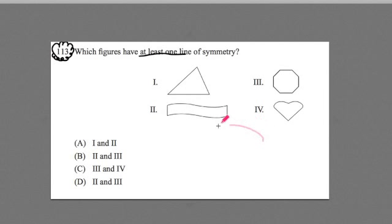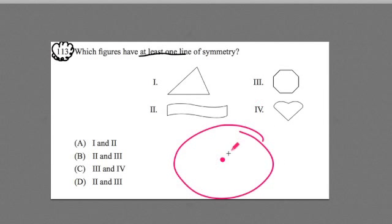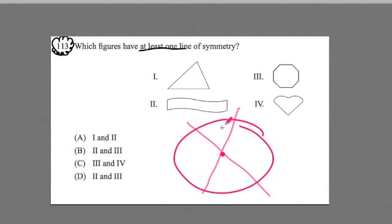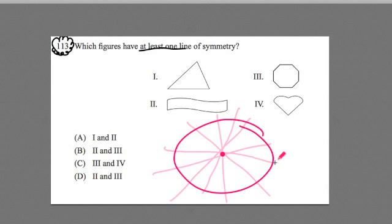The one that is really popular is a circle. How many different ways could you create a line of symmetry for a circle? You could do it here, and here, and here, and here — and the thing with a circle is that it has infinite lines of symmetry.